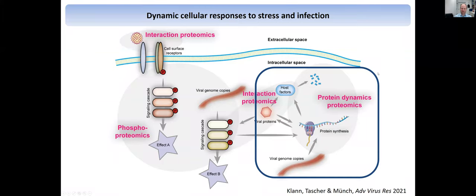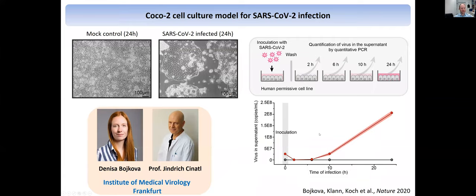So going back to the scheme about what proteomics can do, I will now go through the different stages — how we went through it from protein dynamics, interaction proteomics, and phosphoproteomics. This collaboration, as I mentioned, was with Denisa Wójcikova and Jindrich Cinatl. They managed within days to set up a cellular infection system for SARS-CoV-2. They infected CACO-2 cells with SARS-CoV-2 and saw a quite clear cytopathic effect — cells were infected, and as measured by quantitative PCR, they were also producing virus in the supernatant. So we had the system where we could look at what are the host cell responses to SARS-CoV-2 infection.